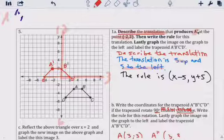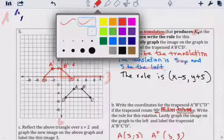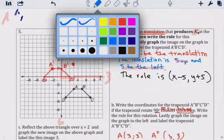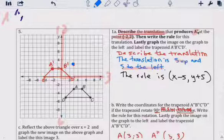3, 3. 3, 3 is A-prime. I'm going to do it in blue. 3, 3 is A-prime. I'm going to do it in blue.